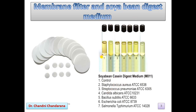Here we can see the control sample, followed by growth of Staphylococcus aureus, then Streptococcus pneumoniae, then Candida albicans, then Bacillus, then Escherichia coli and Salmonella typhi — we can see the growth like this.